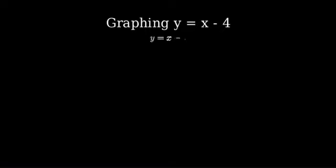To graph the linear equation y equals x minus four, let's solve this step by step. To graph this line, we'll need to find at least two points that lie on it.